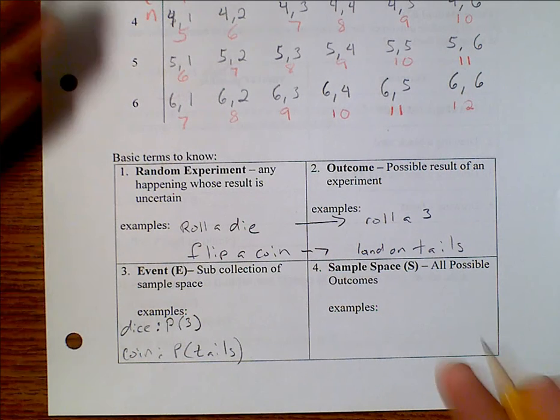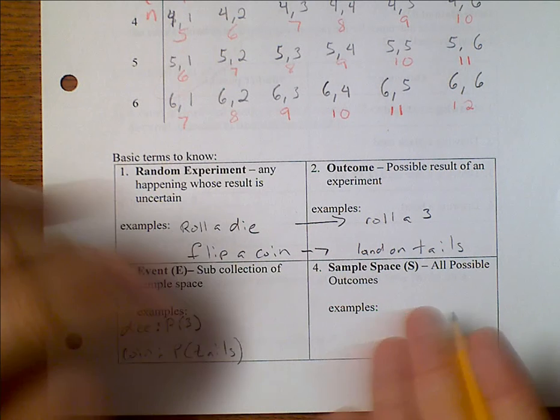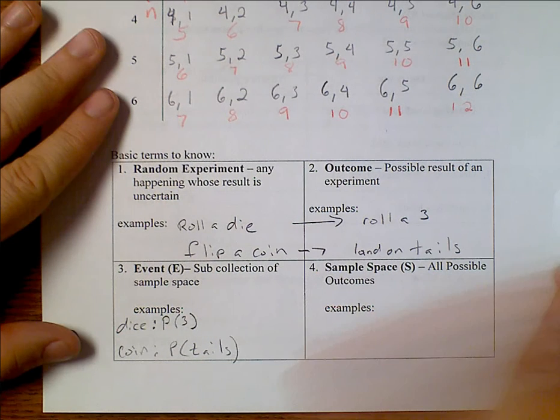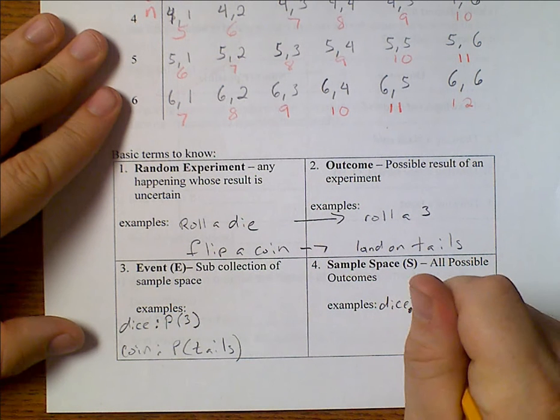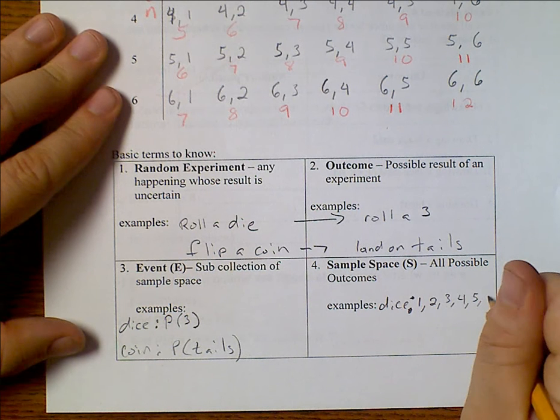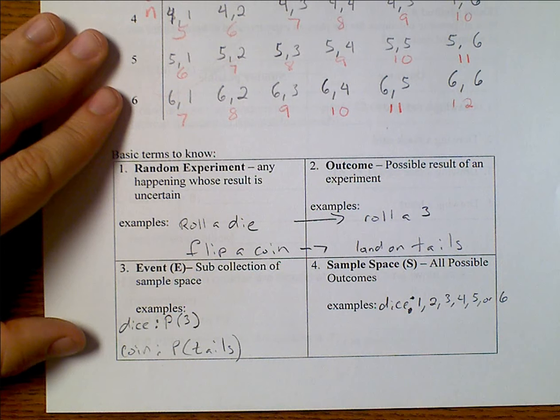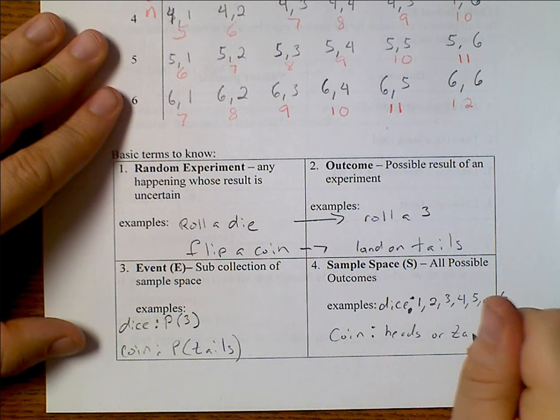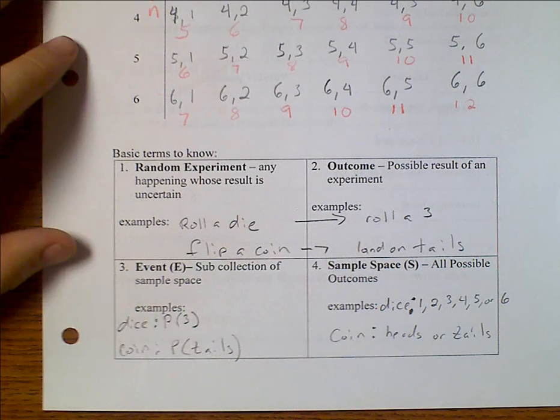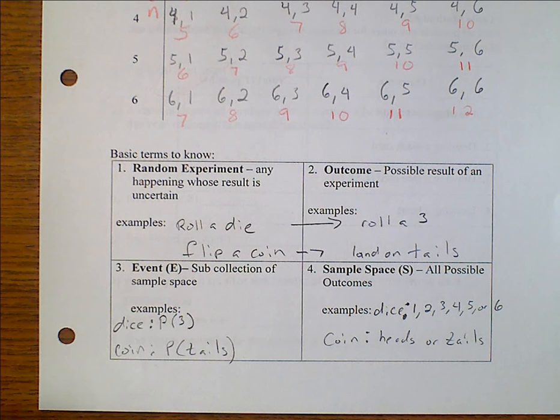Now the sample space is everything that can possibly happen. So really, your events come out of the sample space if they're at all possible. On our dice, we have several options. You can roll one, two, three, four, five, or six. And on my coin, I can get heads or tails. So a random experiment is I roll a die. When I roll the die, I can get a one, two, three, four, five, or six. A possible outcome is rolling a three. The event is actually getting that three. So those are some basic terms for you to know.